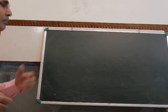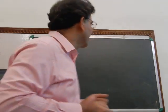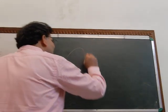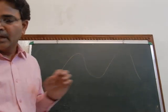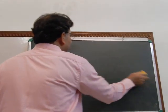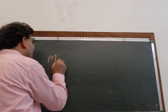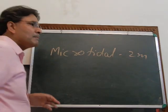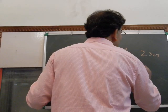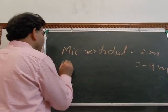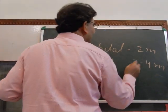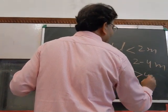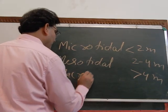Sediments in the tidal zones are located between the high tide and low tide and depend on the vertical rise of the water, known as tidal range. If the tidal range is less than 2 meters, it is known as microtidal. If the tidal range is 2 to 4 meters, it is known as mesotidal. And if it is greater than 4 meters, it is known as macrotidal.